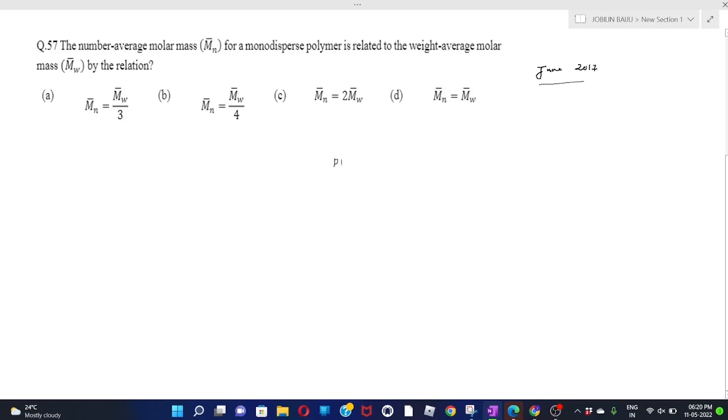Polydispersity index. Polydispersity index PDI is given to you by MM upon MN or also you can write it as MW upon MN. As I told you, MM and MW both are same. MN, that is number average molecular mass, and MW, that is weight average molecular mass.